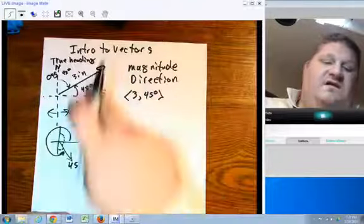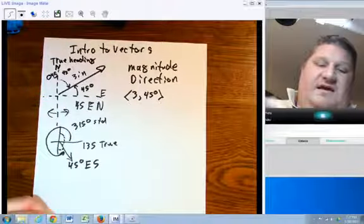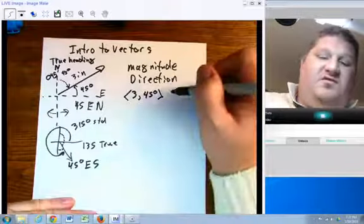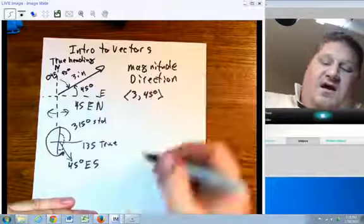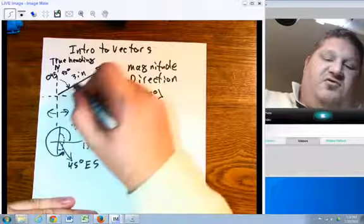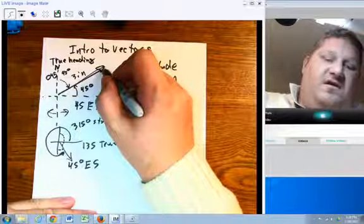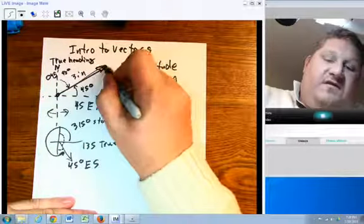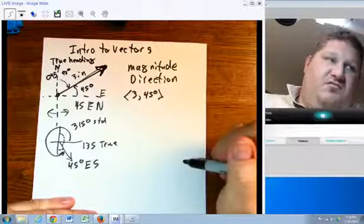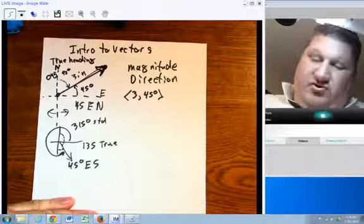So we have a number of ways to talk about these. The key to a vector is it has both magnitude and direction. We've talked about the magnitude - that would be its length. Unlike a ray which goes on forever and ever in one direction, a vector goes from one place to another place. The arrow simply indicates the direction of travel, the direction of motion, the direction of force.